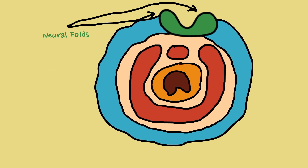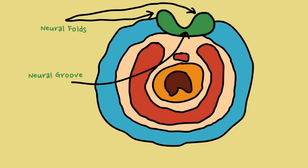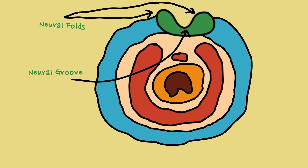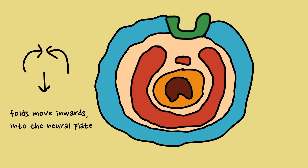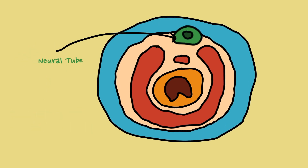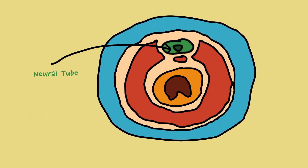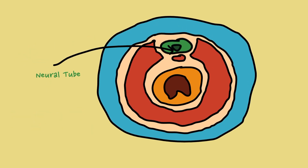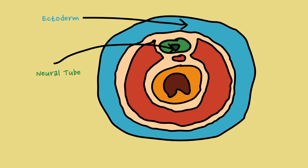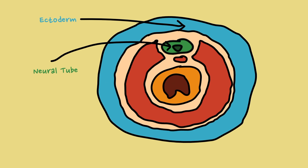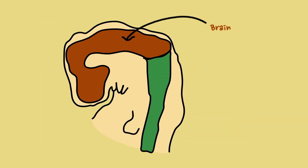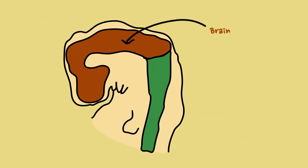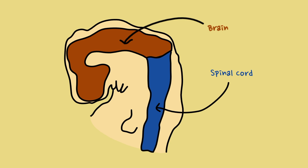These folds roll over the midline and create a valley known as the neural groove. The folds move inwards into the neural plate and form a cylinder called the neural tube, with a layer of epidermal ectoderm above it. The neural tube develops bulges, which at the anterior end become the brain, while the rest of the tube becomes the spinal cord.